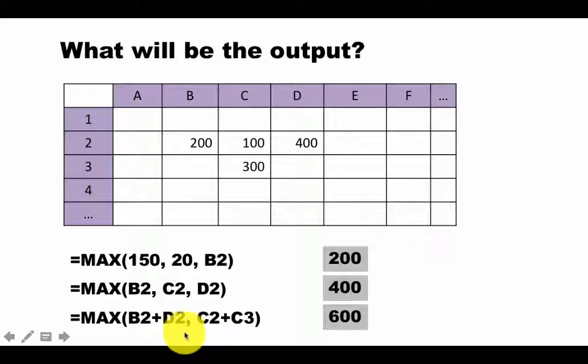So remember that when you pass the arguments to the function, to any function, you separate the arguments by commas. So the first argument is b2 plus d2, the second argument is c2 plus c3. And therefore the result is going to be 600 because b2 plus d2 is 600, c2 plus c3 is only 400, so the maximum of those two is 600.